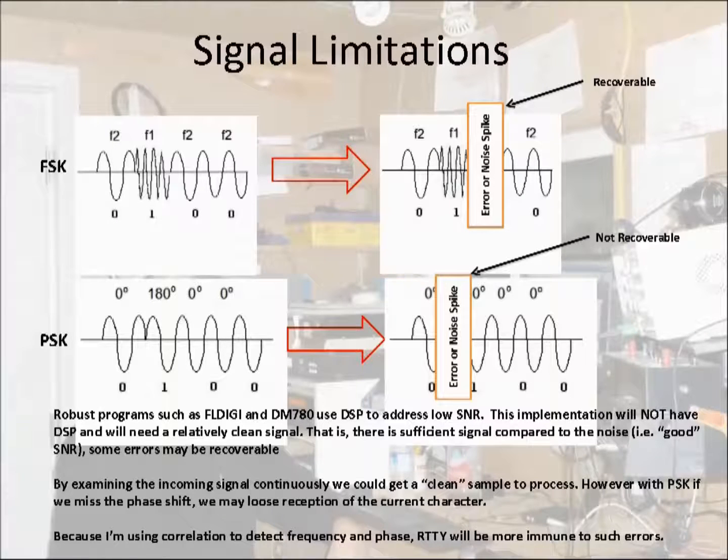However, if the same noise spike was to wipe out the phase transition, the correlation technique I'm using may not be able to detect a phase change. Currently, right now, I'm getting about 10 to 20 percent of PSK characters being dropped and I'm still experimenting with ways how to improve this.